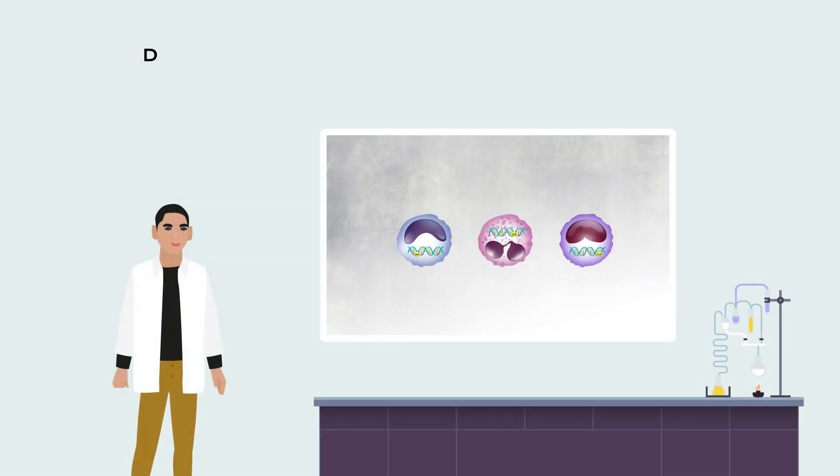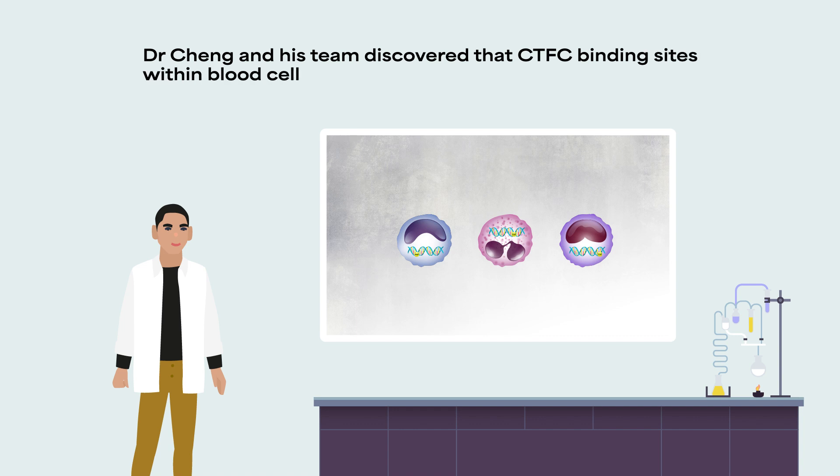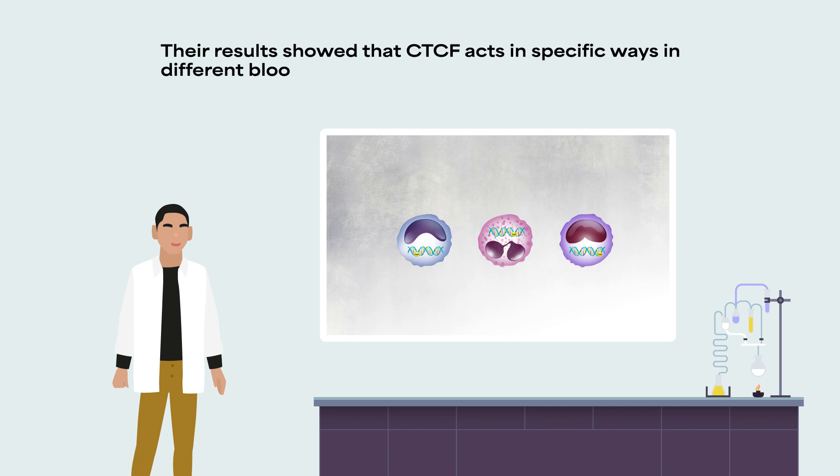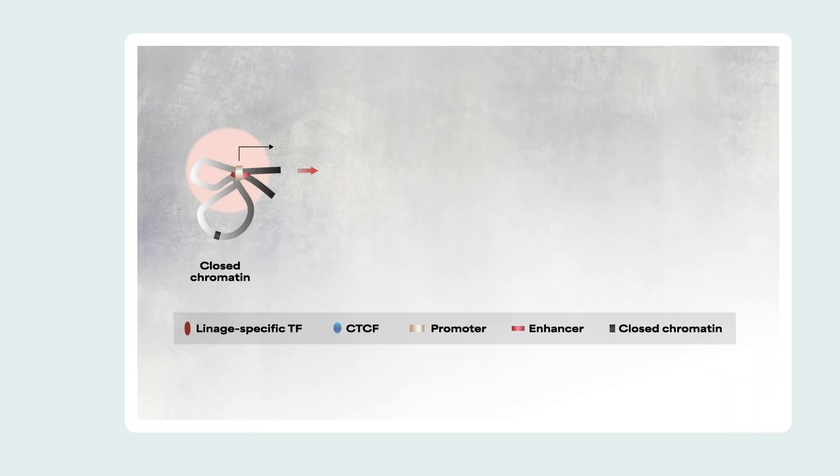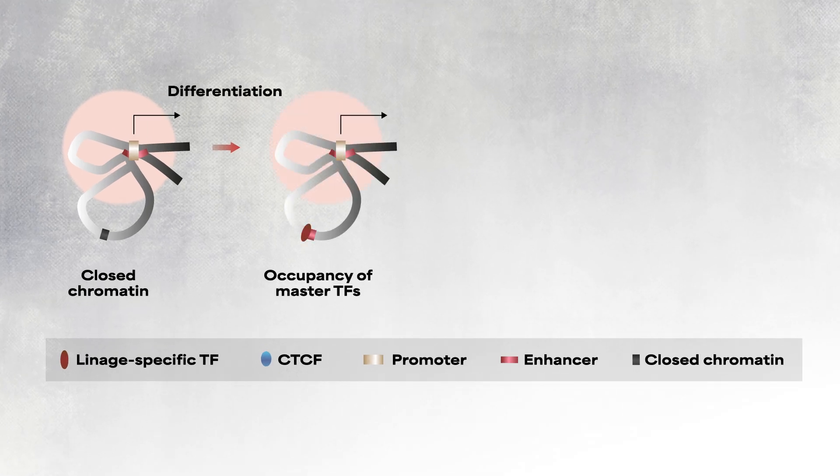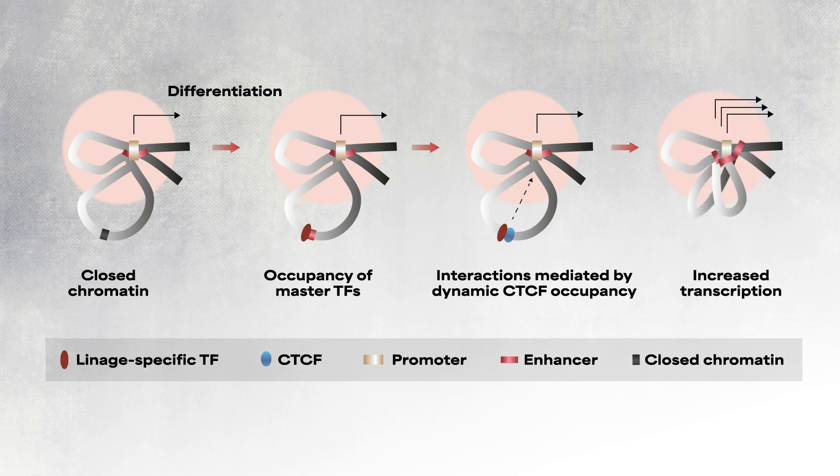Excitingly, Dr. Cheng and his team discovered that CTCF binding sites within blood cells did indeed vary according to cell type. Their results showed that CTCF acts in specific ways in different blood cell types. From their observations, the team suggests a new model of how CTCF functions as an anchor to mediate certain interactions that are essential for blood cell production.